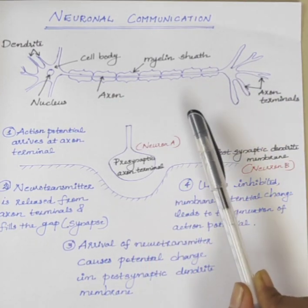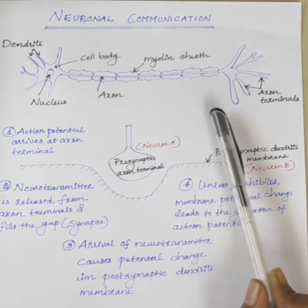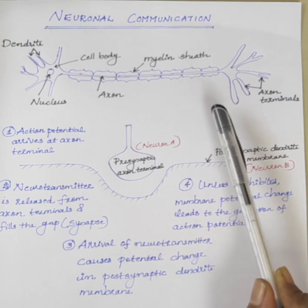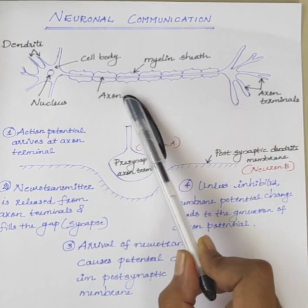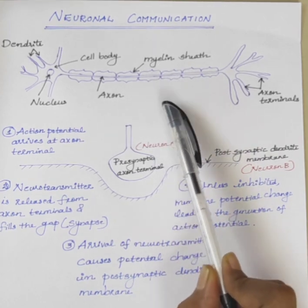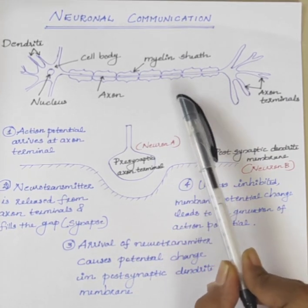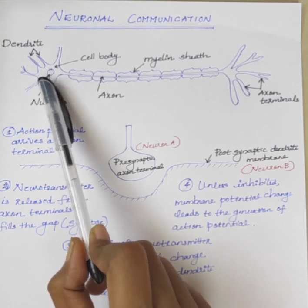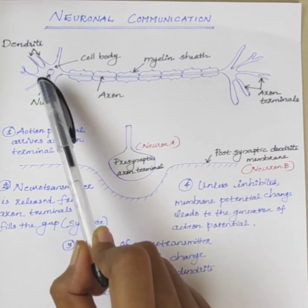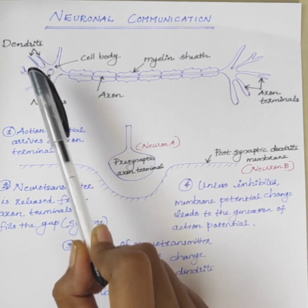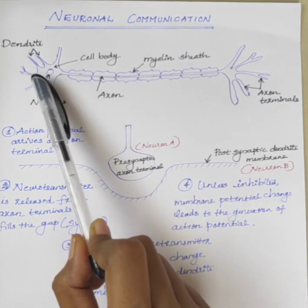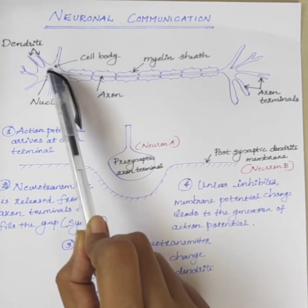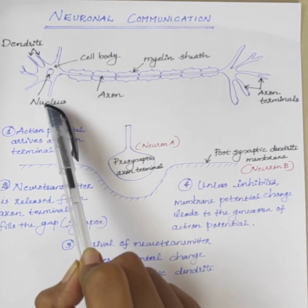Before going to the communication between two neurons, we will just discuss what are the functions of each part in a neuron. So first one is the dendrite. The function of dendrite is to receive stimulus and carry it towards the cell body. This one is a cell body with a nucleus.